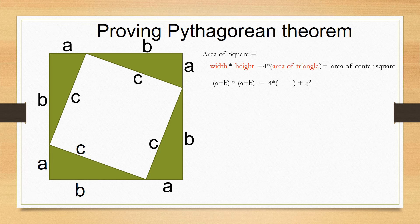What is the area of each triangle? One half a times b. Right again.